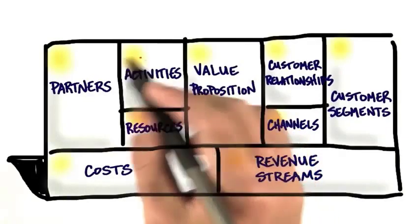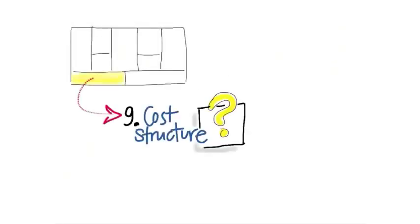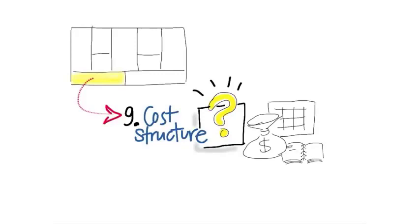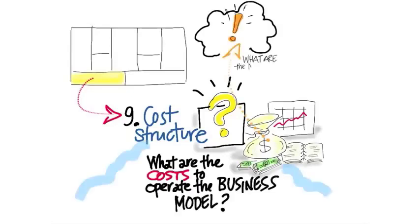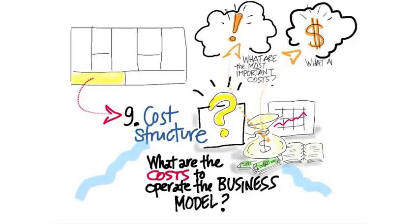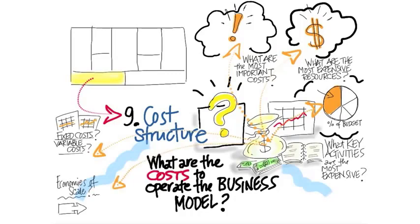Finally, all of this adds up on the left-hand side to cost — what are the costs and expenses to operate the business model? It's not just the obvious ones like people, buildings, or materials. You want to ask what are the entire costs to operate your business model: the most important costs, the most expensive resources, and which key activities are the most expensive. You also want to address typical accounting questions — what are fixed costs, variable costs, and are there economies of scale? You want a good handle on what it will cost to run your business.